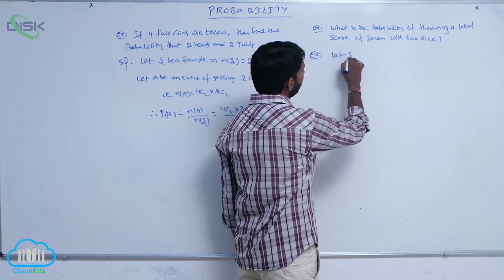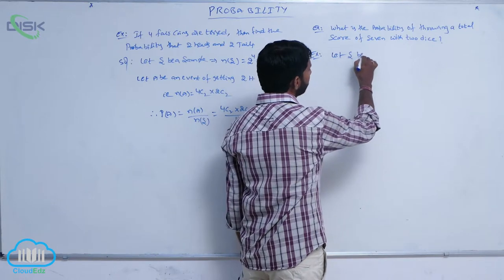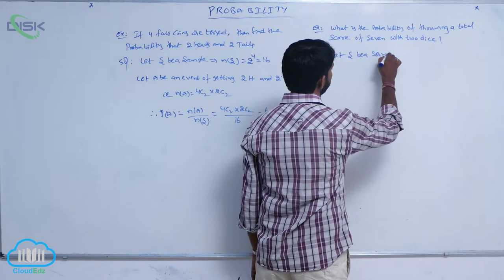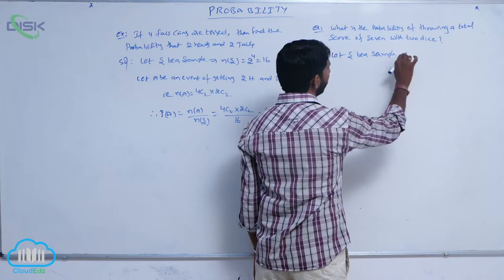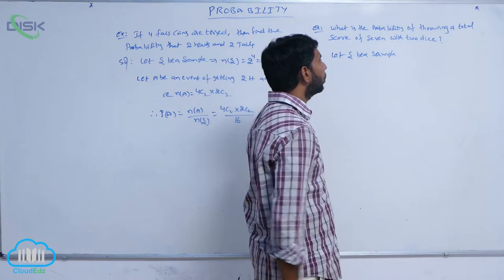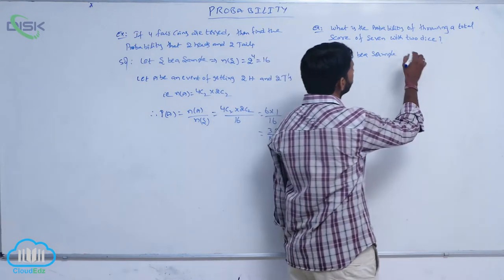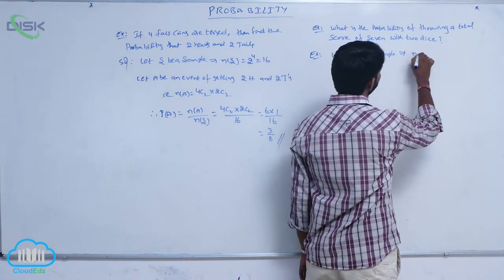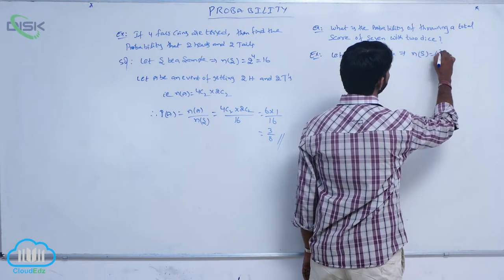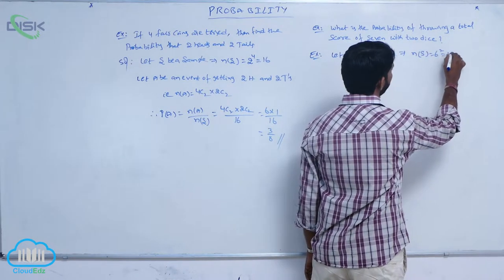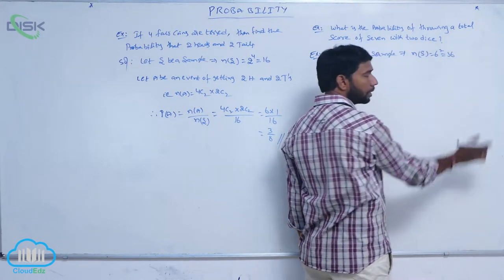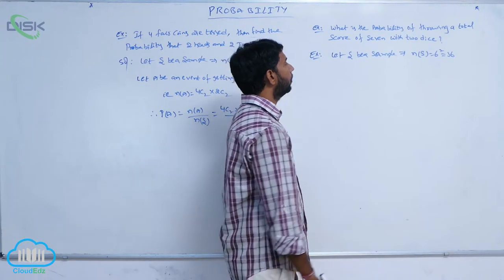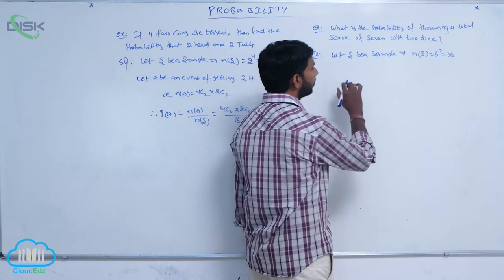Let S be the sample space. Two dice are rolled, so n(S) is equal to 6 squared, that is equal to 36.